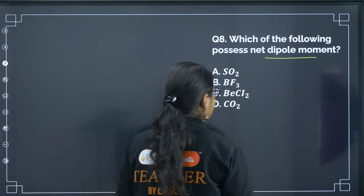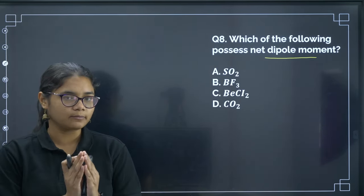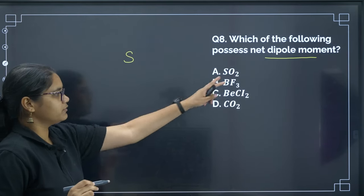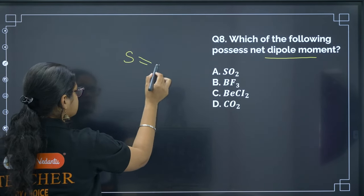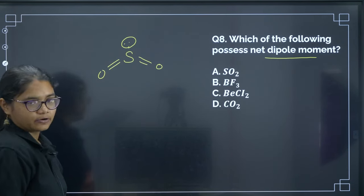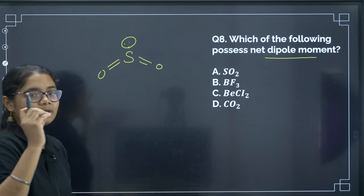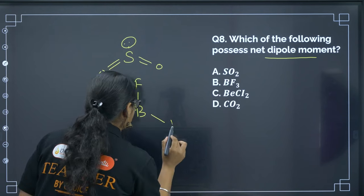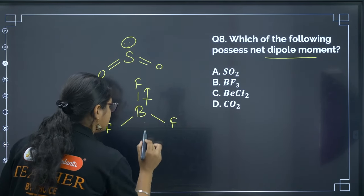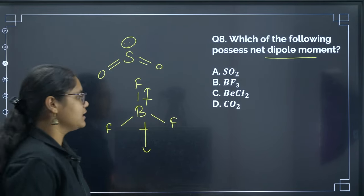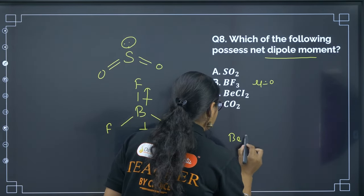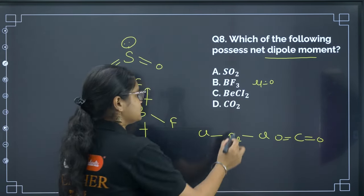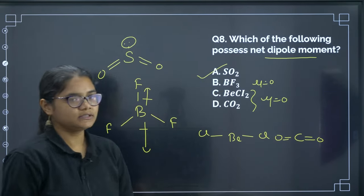Next: which of the following possesses a net dipole moment? Net dipole moment means the individual dipoles do not cancel. SO2 has 6 valence electrons on S; 4 are used for 2 bonds with oxygen, and the remaining lone pair causes a bent structure — so it has a net dipole moment. BF3 is trigonal planar — vectors cancel, net dipole = 0. BeCl2 and CO2 are linear — also cancel. So the correct answer is option A (SO2).